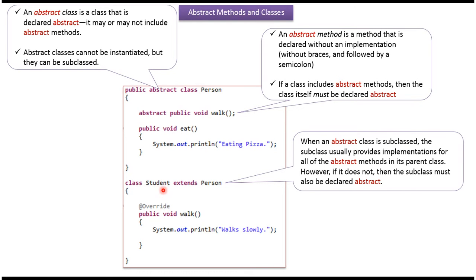Here you can see the Student class, which extends the Person class. Since Person is an abstract class, the Student class must provide implementations of all the abstract methods present in Person. If the Student class does not provide implementations for all abstract methods, then it should also be declared as abstract.